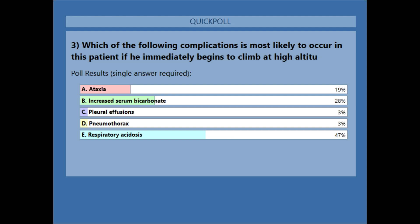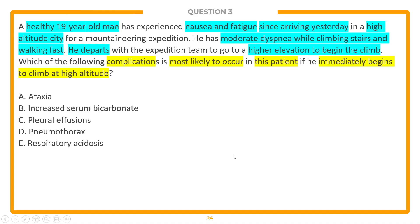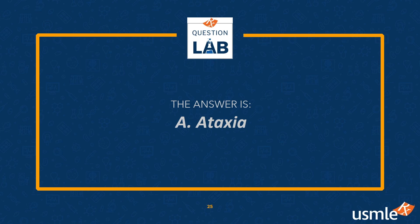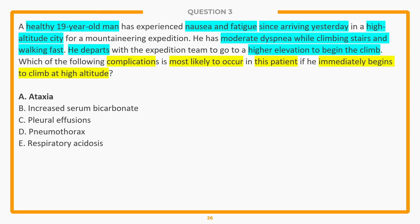Looking at the poll results, we see a favorite answer choice E, with answer choice B coming in second place and answer choice A in third place. The correct answer is actually A, ataxia — the third-place finisher. Let's take a look at what's going on in this question. Hopefully you picked up that this patient is experiencing what we call altitude sickness.